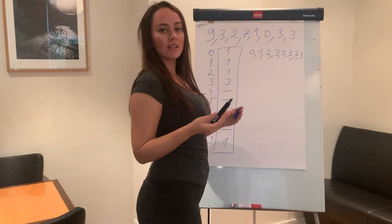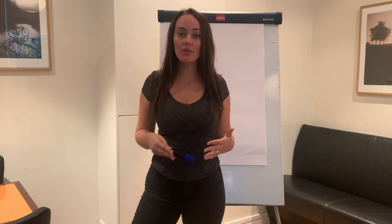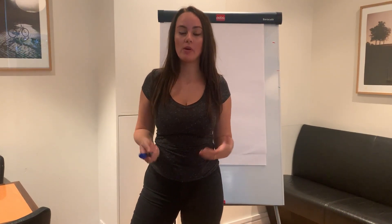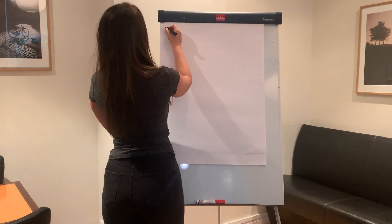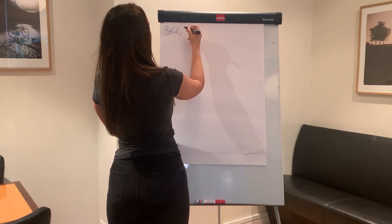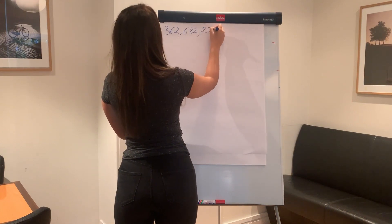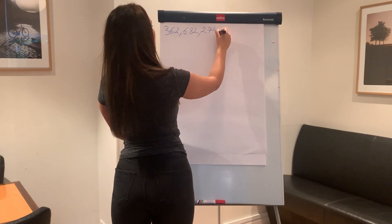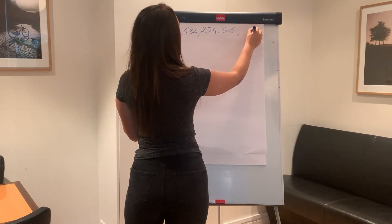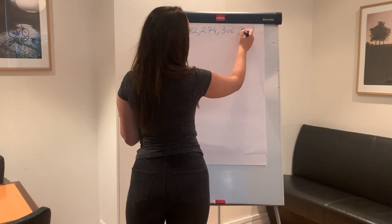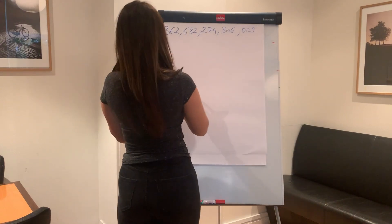This is basically how the principle of the algorithm works. Now that we've understood that, let's try a more difficult example. We're going to sort the following three-digit numbers: 362, 682, 274, 306, and 9 — which I will pad with two zeros so we all have three-digit numbers, making it 009.